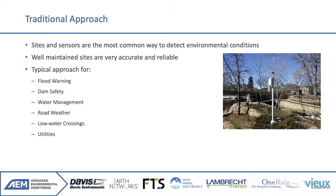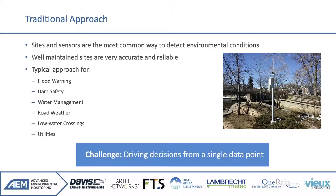One of the main challenges is that we're often driving decisions from a single data point. We can have the most accurate data point — whether we're deciding to evacuate an apartment building, close a road, or send someone to open gates — but we're still driving a decision from a single data point. We can supplement networks with third-party data sources and derived data like radar rainfall or lightning data, but we're often limited to making sometimes very critical decisions off of what data point we receive back.